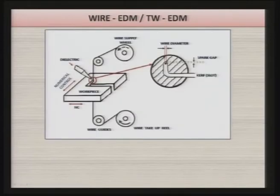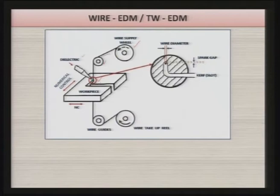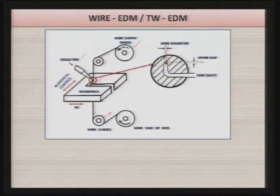This process is also known as traveling wire electric discharge machining. A schematic diagram shows the wire supply wheel from which wire comes, moves over a pulley, and arrives at the material removal area. A nozzle supplies dielectric between the wire and workpiece — the inter-electrode gap. The wire is then pulled by the take-up reel via wire guide pulleys, keeping the wire in continuous motion.